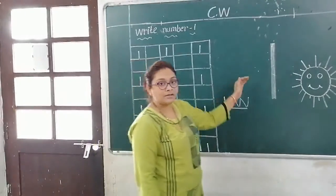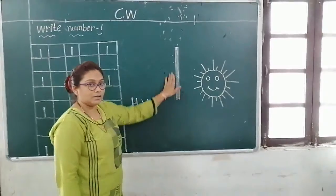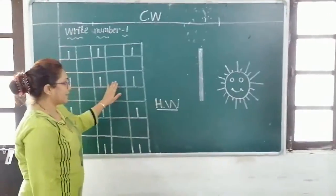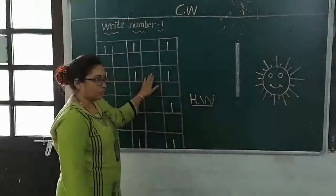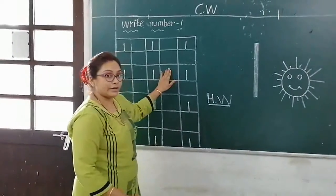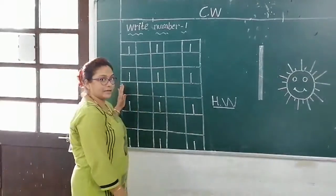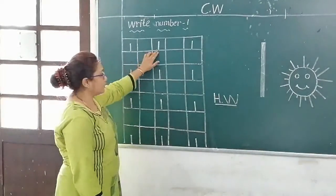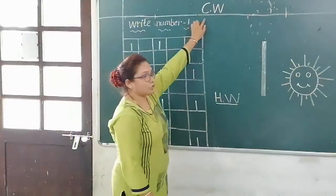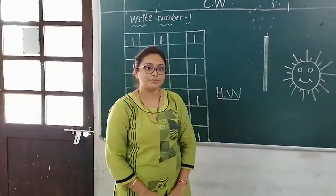Now, do you know about number one? This is number one. You have to write down in your square book — number one, C.W. and H.W. Thank you.